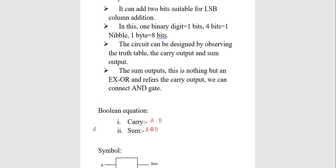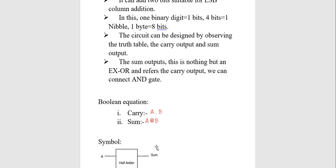The Boolean equation for the half adder: there is a carry and a sum. For carry, the Boolean equation used is A·B. A·B is the equation for the carry, whereas for the sum we use A XOR B — that is A ⊕ B. This is the Boolean equation of the half adder.